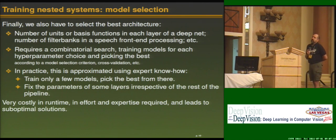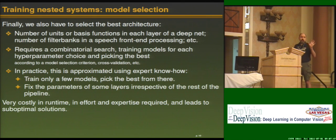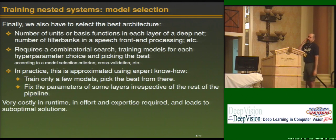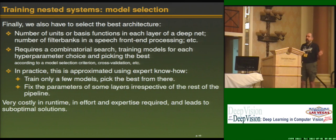In many models, you also want to do model selection once training is done. That means you have to repeat everything for every choice of model class. For example, if you have a neural network and want to select the number of hidden units, you train with 100 hidden units, then change that number and train again. This is extremely time-consuming — it's a combinatorial search — and in practice everyone just picks a few models randomly and picks the best one.